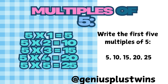If asked to find the first five multiples of 5, start with 5 and skip count by 5s — that's the quickest and easiest way: 5, 10, 15, 20, and 25. You could also multiply 5 by 1, then by 2, then by 3, and so on; the products are the same answers and they are the multiples of 5. Don't forget, you can find many more multiples of 5 by continuing to skip count or by multiplying 5 by a greater number.